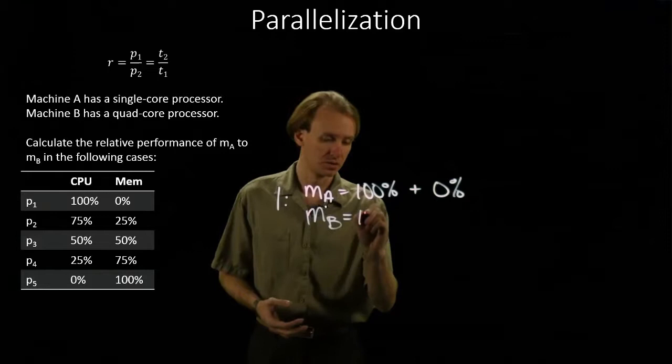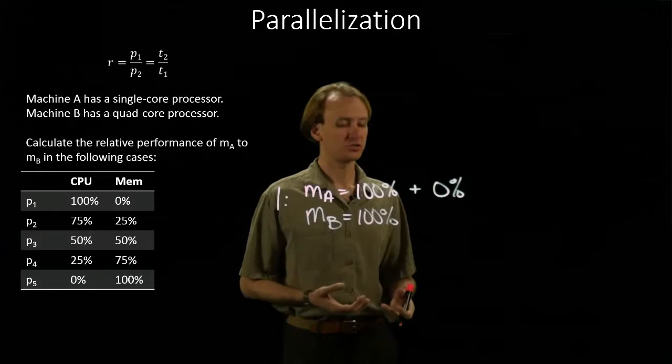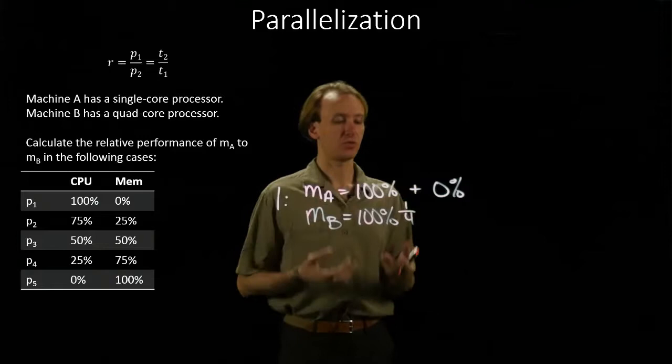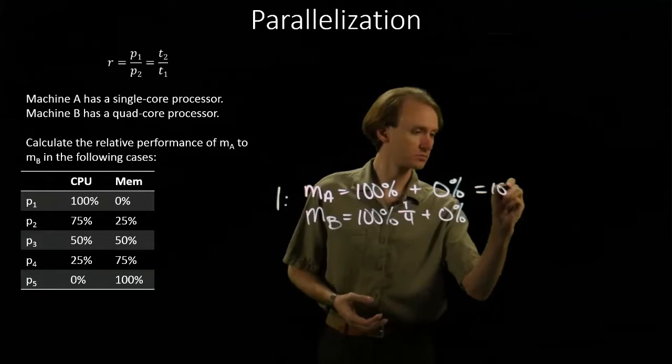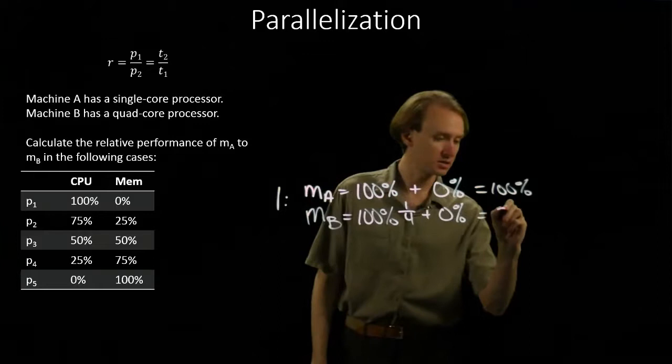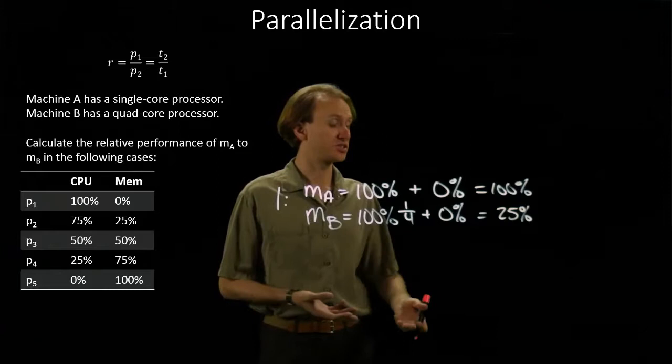We know that the quad-core processor will finish those instructions in one-fourth as much time as the single-core processor did. And accordingly, Machine B is still spending 0% of its time on the memory. So now I have 25%, which tells me that Machine B requires 25% as much time to accomplish the same amount of work that Machine A did.